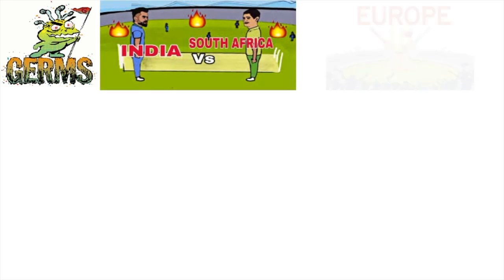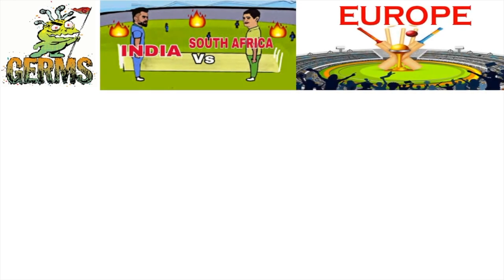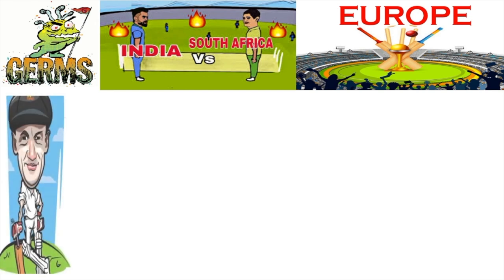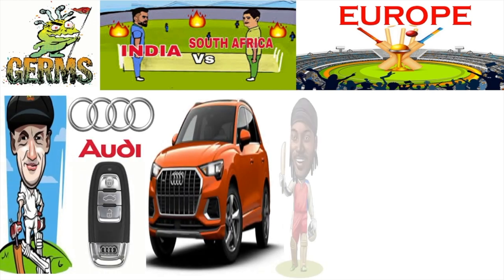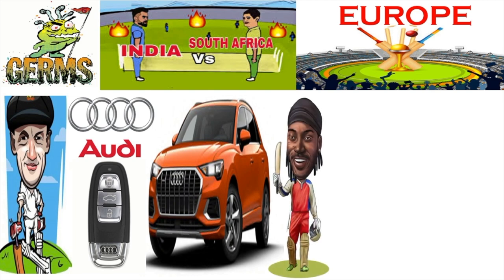Can you identify this germ? You guessed it right — this is the same germ that spoiled the G7 summit. This germ went to watch the final cricket match between India and South Africa in Europe. India won the match. Australian legend Don Bradman gifted the key of a newly launched Audi S to Chris Gale for scoring the highest runs in the Tri Series.